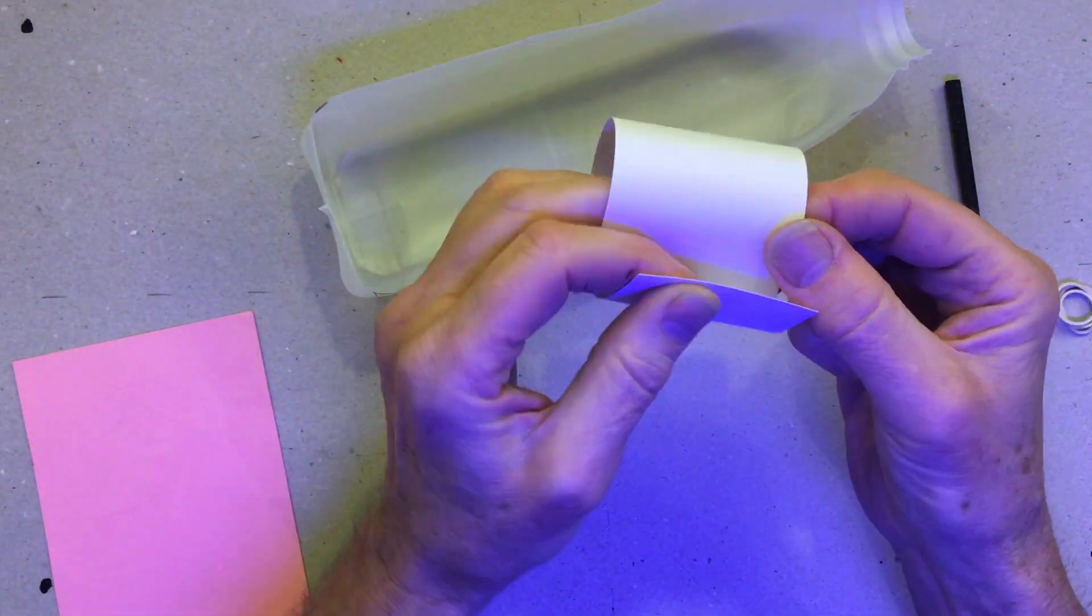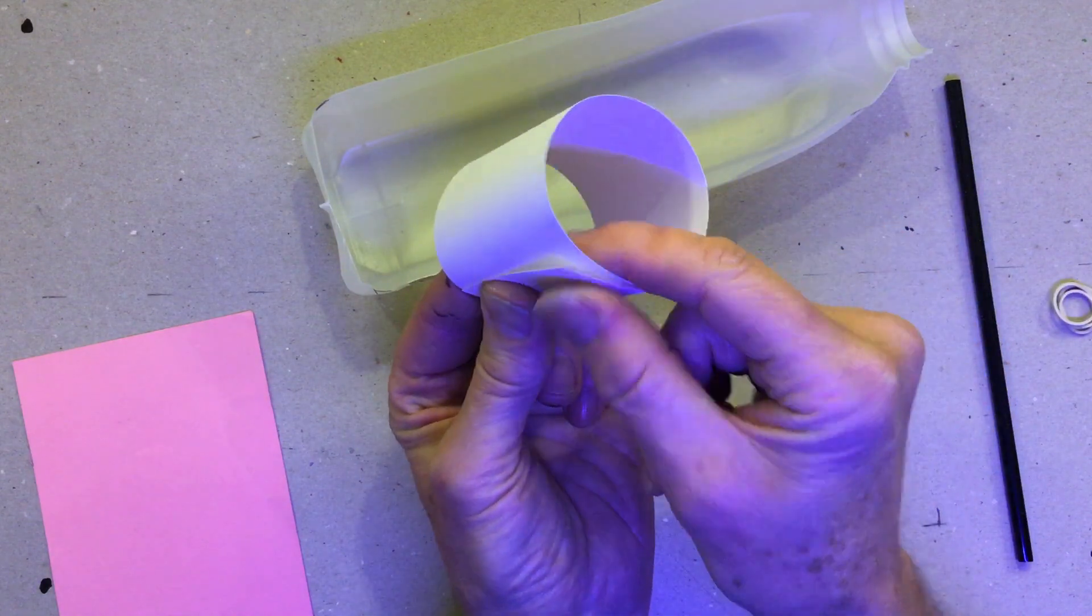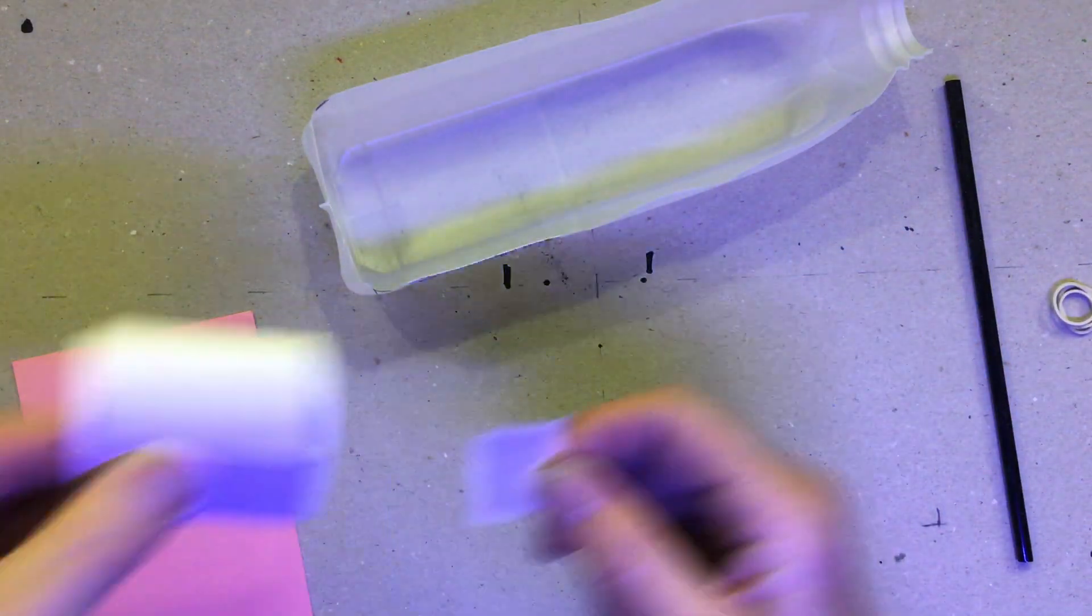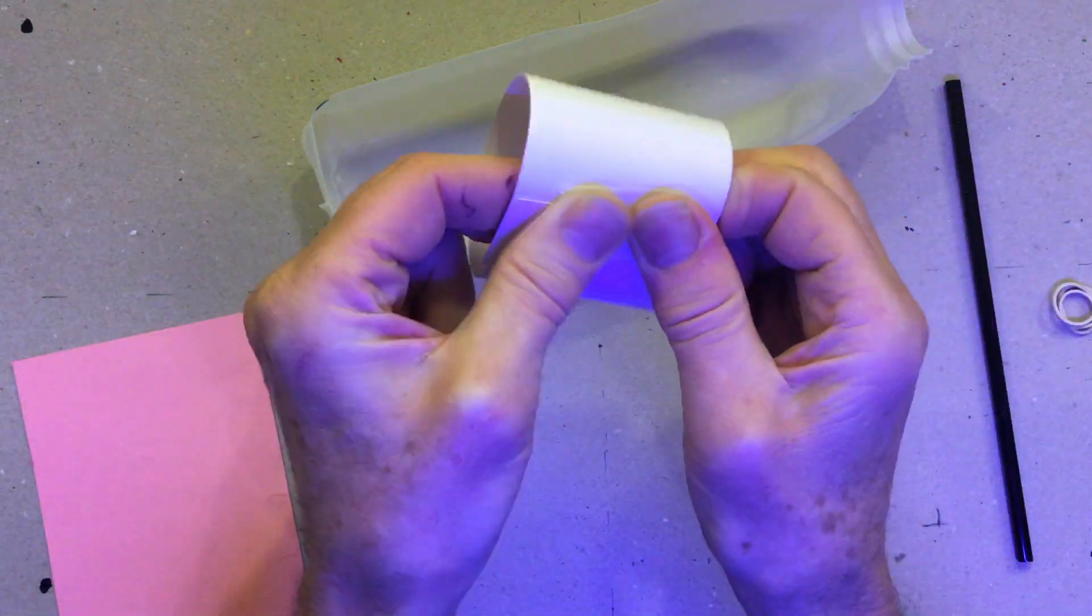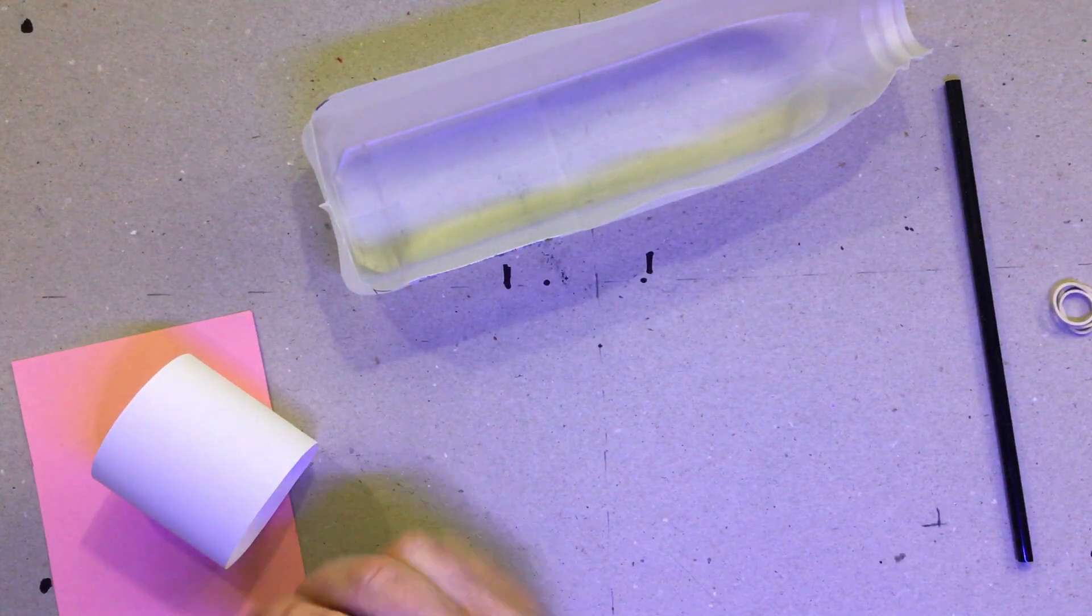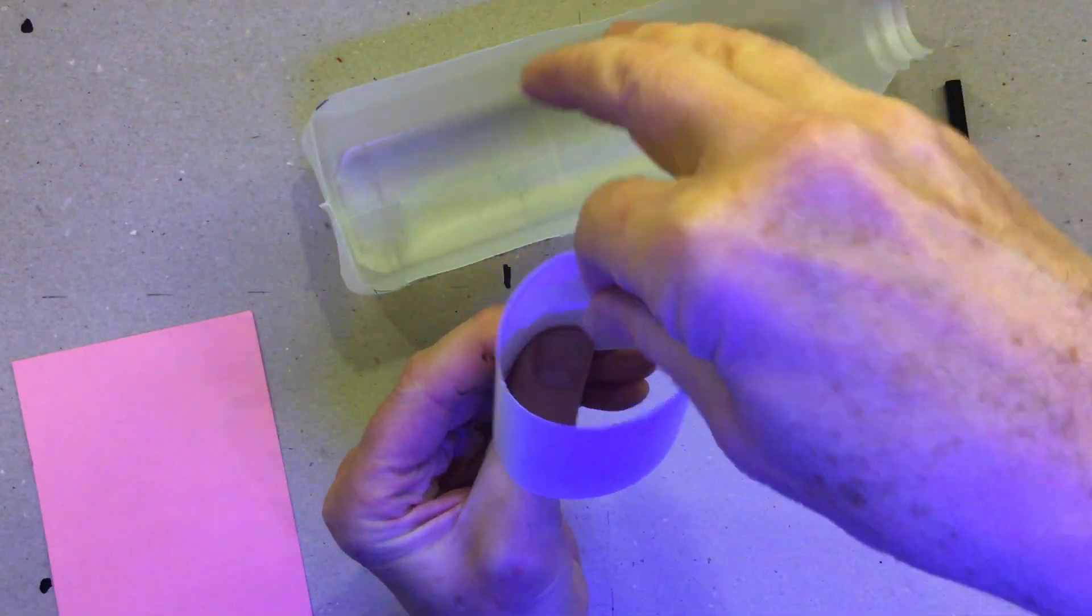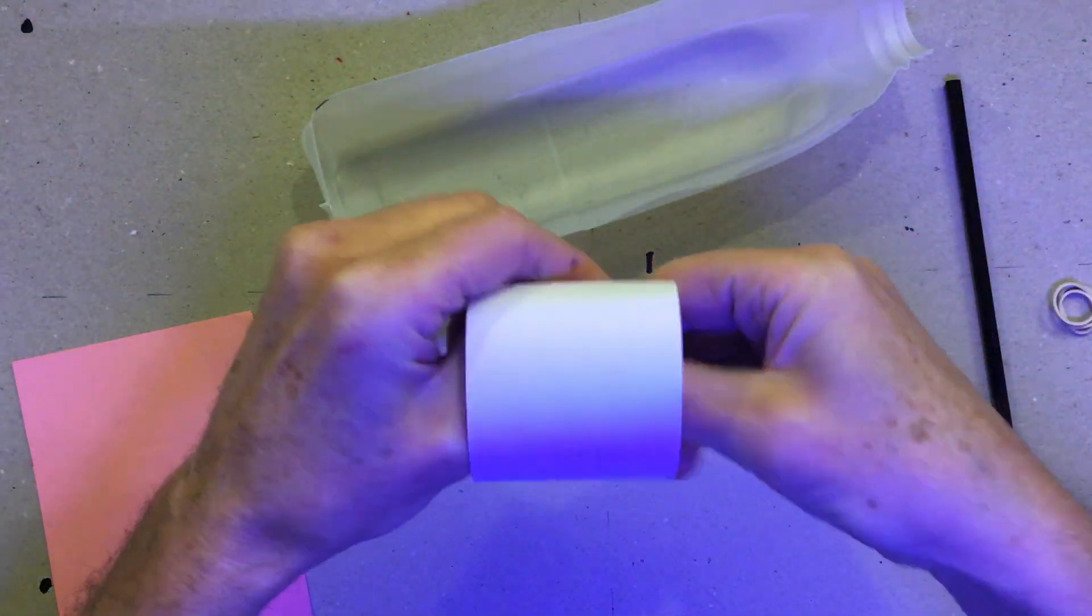All we need to do is take your long strip of card, curl it all the way around so it overlaps. Then take some sticky tape, stick it on and hold it like that. Just to make it extra strong, take another piece of sticky tape and go inside where the overlap is. There we are.